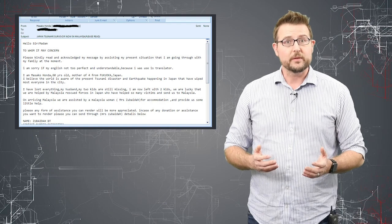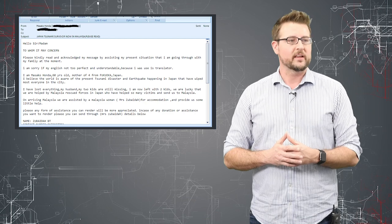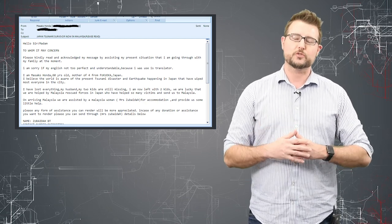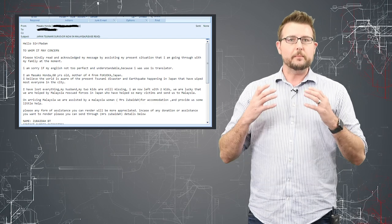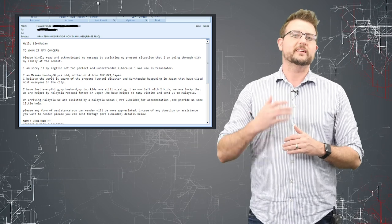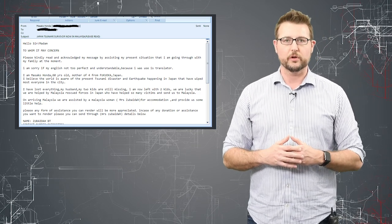Another example of this is social engineers taking advantage of tragedy, something I really hate. Whether it's a flood, a hurricane, an earthquake, or a big natural disaster, often a big global tragedy generates a lot of social engineering emails where the attacker will pretend to be a charitable organization and ask you for your donation.